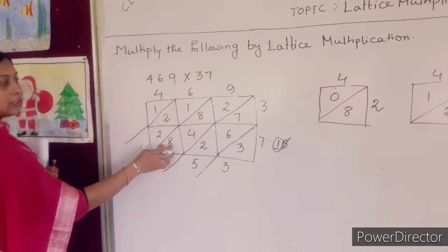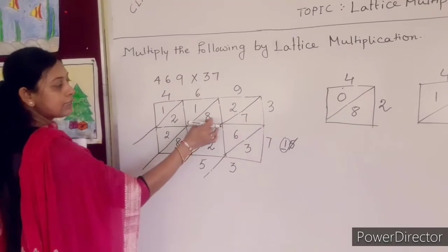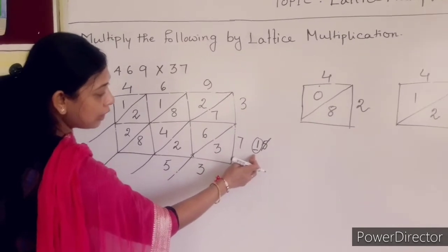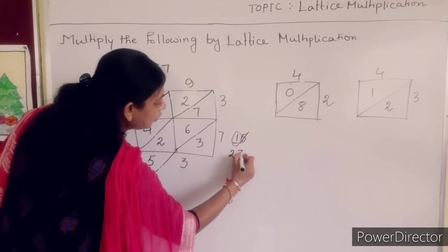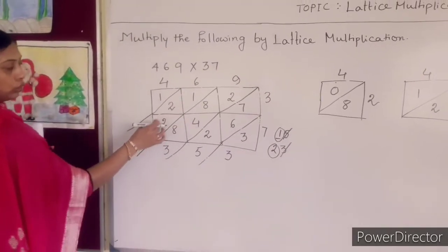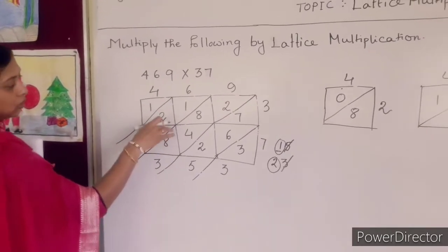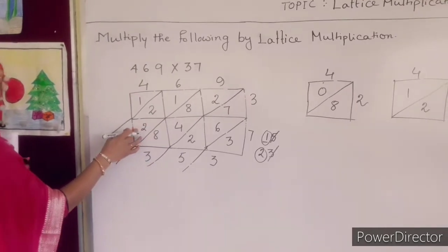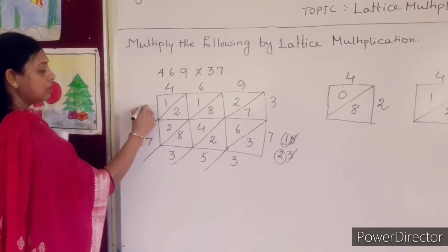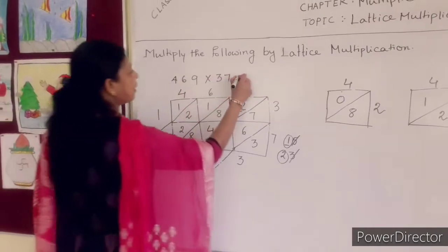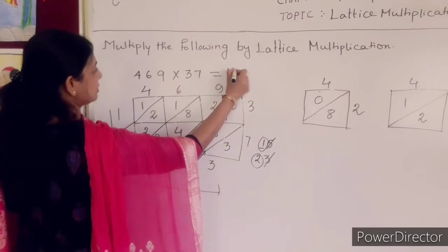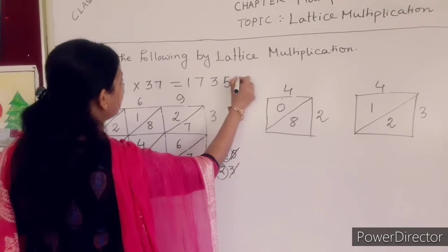Now the next triangle — 1, 2, 3 triangles. You add the digits present in those triangles. 1 plus 2 plus 3: 3 plus 2 is 5, 5 plus 2 is 7. Nothing is in your hand. So only 1 is left in the last triangle, so you write 1. The answer after multiplication: you write the numbers as 1, 7, 3, 5, 3.